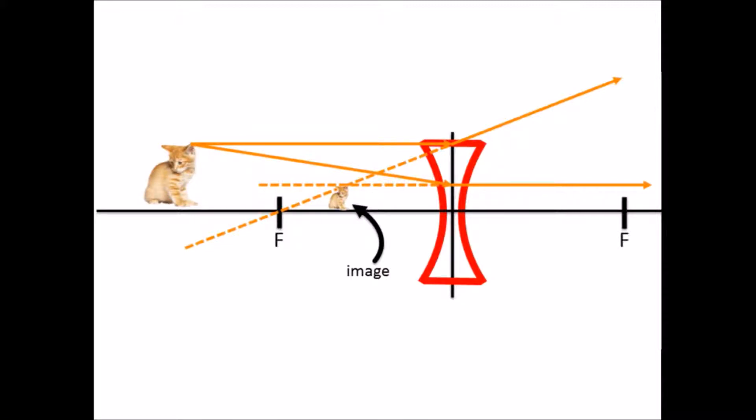Let's put some adjectives on it. The cat's image is smaller than it, so we say it's diminished. It's still on its feet, so it's an upright image.